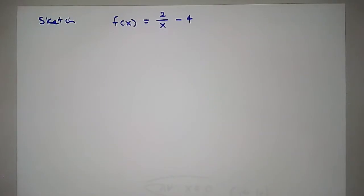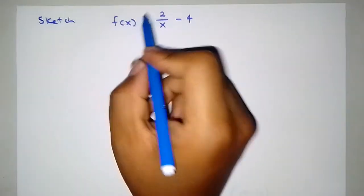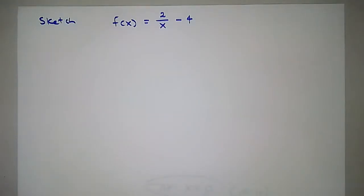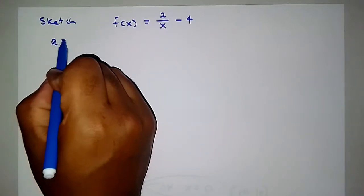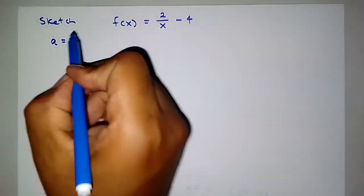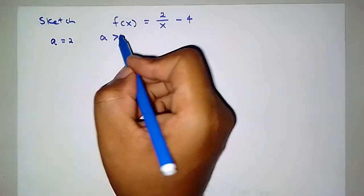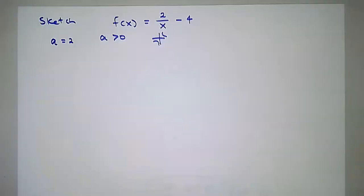Welcome once again to hyperbolic functions for Grade 10. Before us we've got f of x equals 2 divided by x minus 4, and we're asked to sketch the function. First and foremost, our a equals 2. We realize that a is greater than 0, so our graph must be in the first and third quadrant.